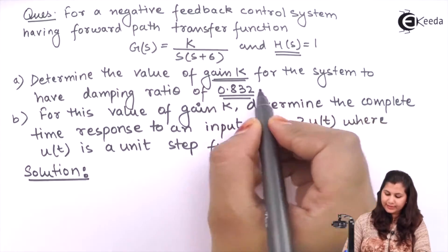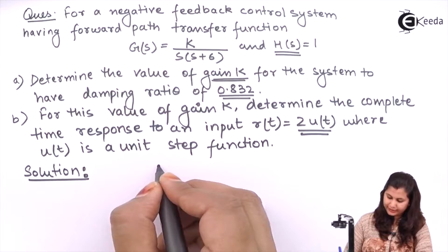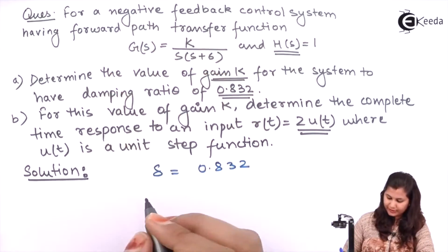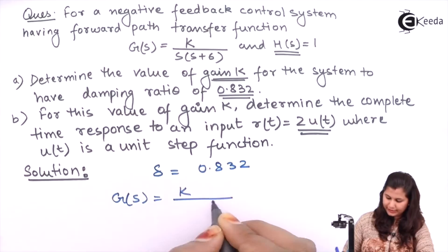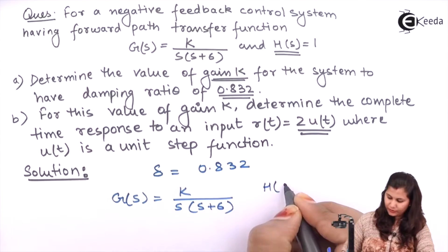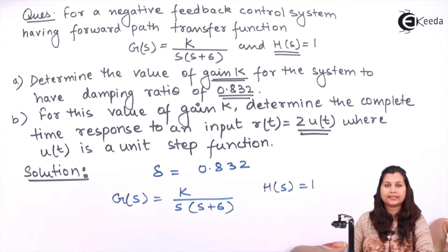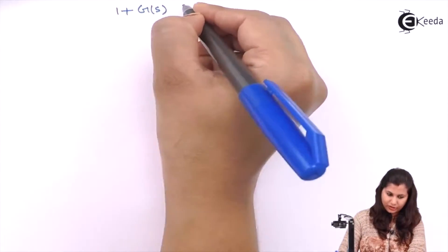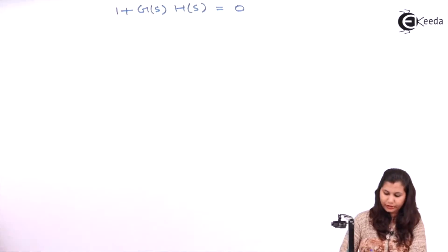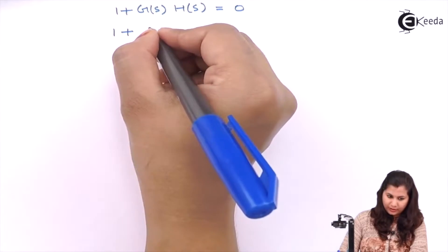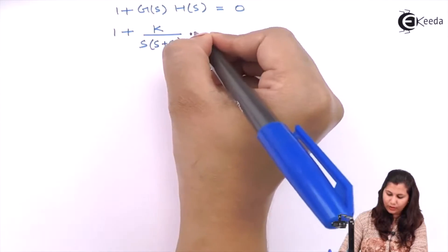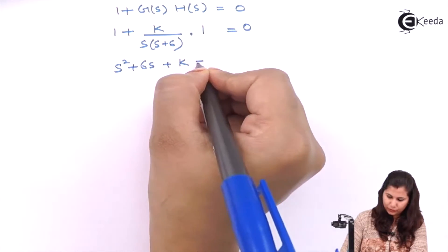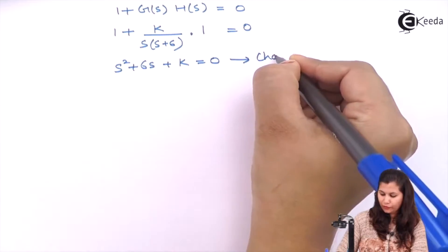It is given that the system has a damping ratio of 0.832, that is delta equals 0.832. The forward path transfer function is G(s) = k/(s(s+6)) and H(s) = 1. Let us first determine the characteristic equation of this system. The characteristic equation is 1 + G(s)H(s) = 0, which gives 1 + k/(s(s+6)) = 0, resulting in s² + 6s + k = 0.